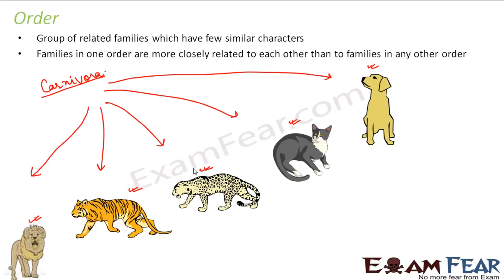If you talk about the genus, the genus for a dog is Canis. For a cat, it is Felis. And for leopard, tiger, and lion — all three — it is the same: Panthera.